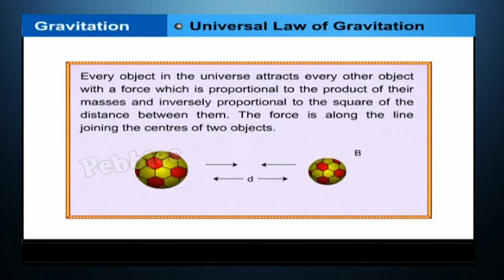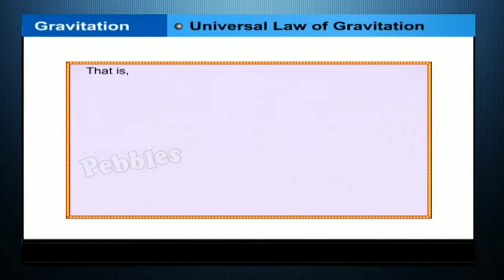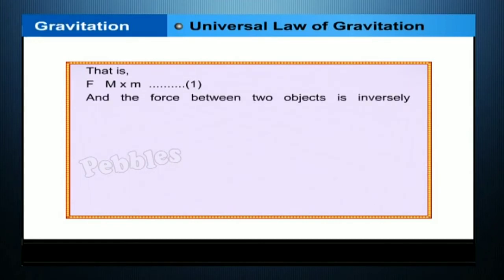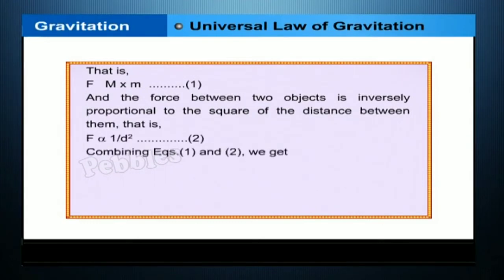Let the force of attraction between two objects be F. According to the universal law of gravitation, the force between two objects is directly proportional to the product of their masses, that is F = M × m. The derivation for the universal gravitational constant G is obtained as shown.